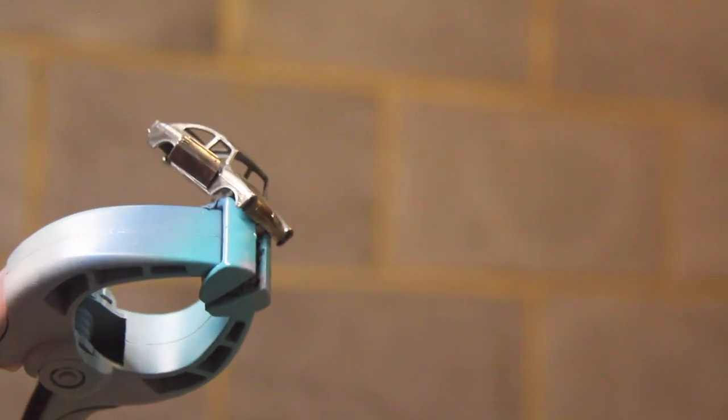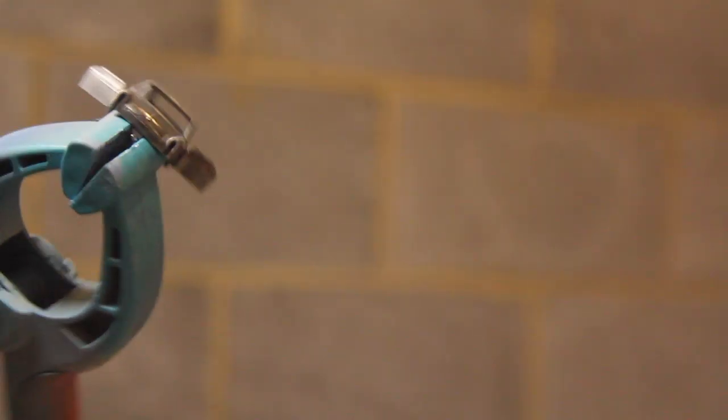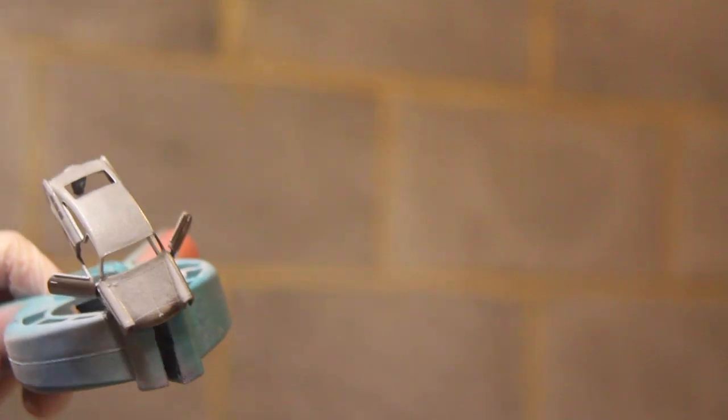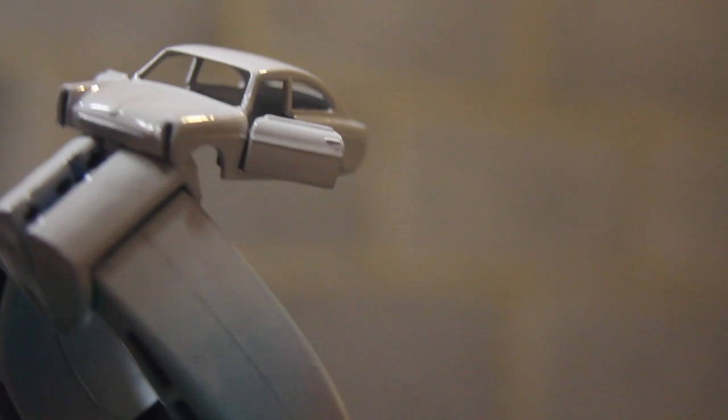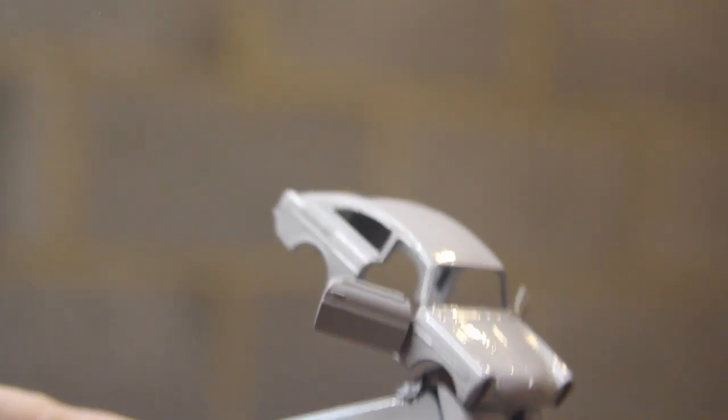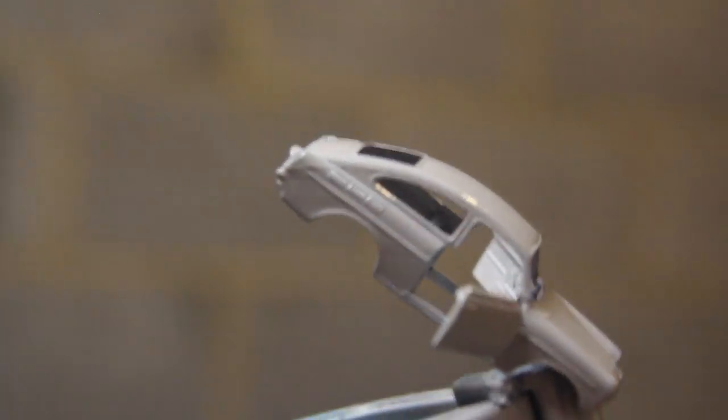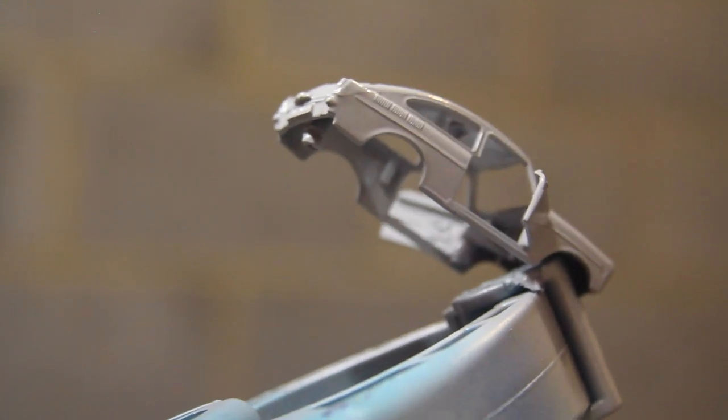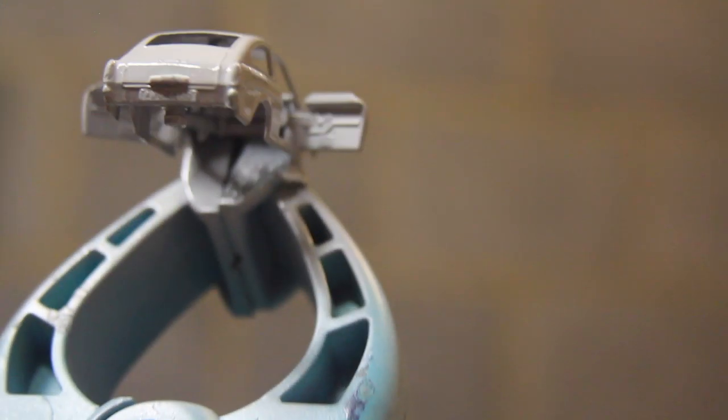Once I'm happy with it, I'll apply the Tamiya Fine Surface Primer in light grey. The joins are all looking pretty decent. It's gone on in a very nice smooth and even layer, and none of the details are really lost.